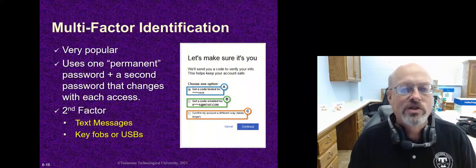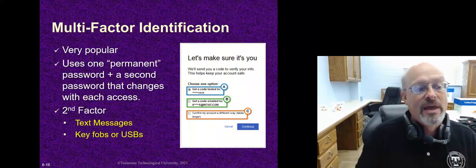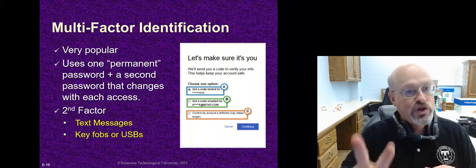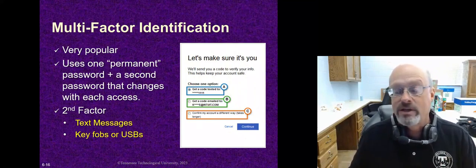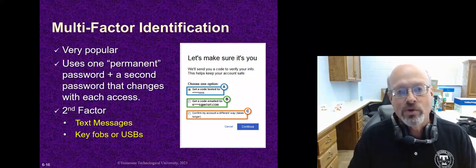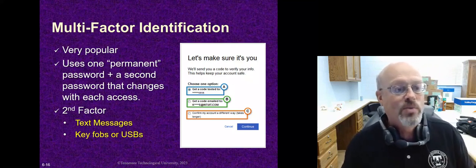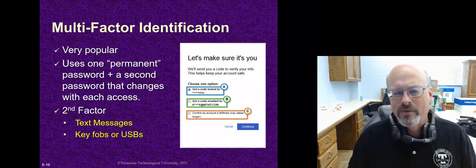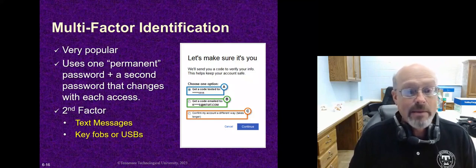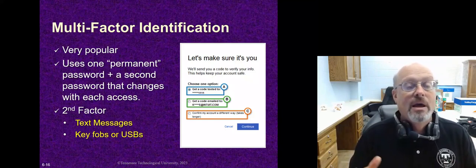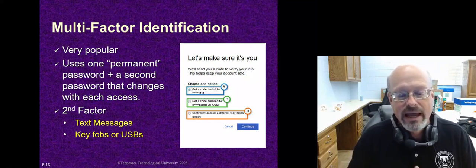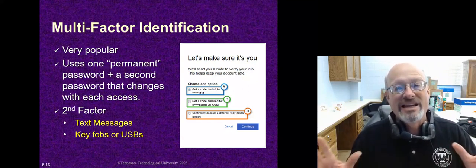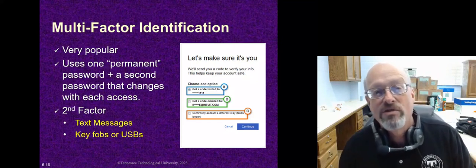There's also multi-factor identification, which you often see. This is where you combine a password with a second code or token — as in the case of a VPN — or maybe a biometric measure, so you use two measures to get in. At Tennessee Tech, whenever I log onto the site I type in my password, then click a button, it sends a code to my phone, and I type that code in as well — that's multi-factor identification. Often that second factor is in the form of a text message, but it could also be your voice or some kind of biometric measure.